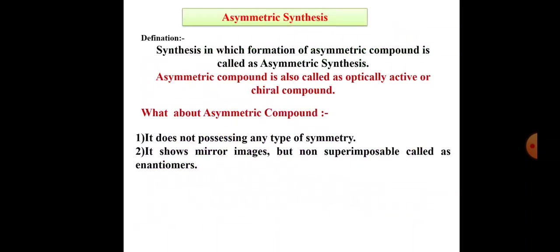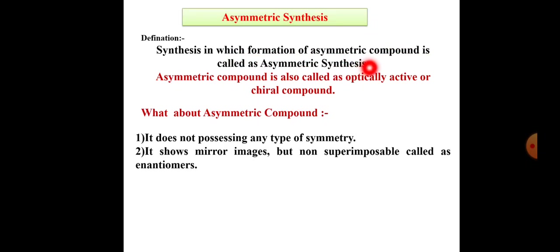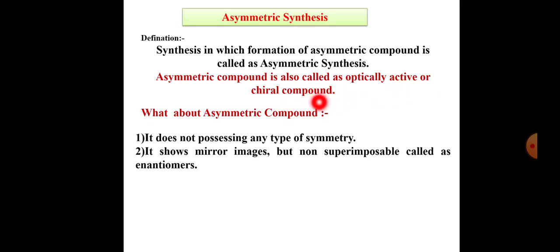First, definition of Asymmetric Synthesis. Asymmetric synthesis is a synthesis in which formation of an asymmetric compound takes place. The asymmetric compound is also called as optically active or chiral compound.